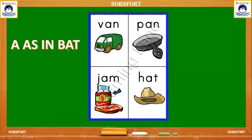A as in bat. Where is A in the bat? It is in the middle of B and T. In the middle we can see the bat — A is in the middle. Same as it is, we can see in the van: V, A, N — van. A is in the middle of V and N.